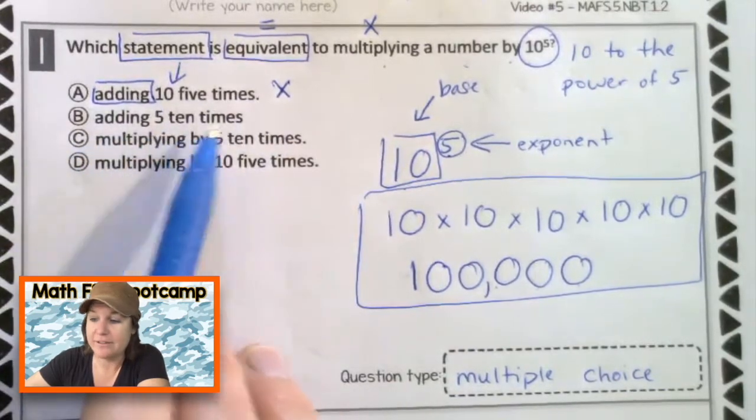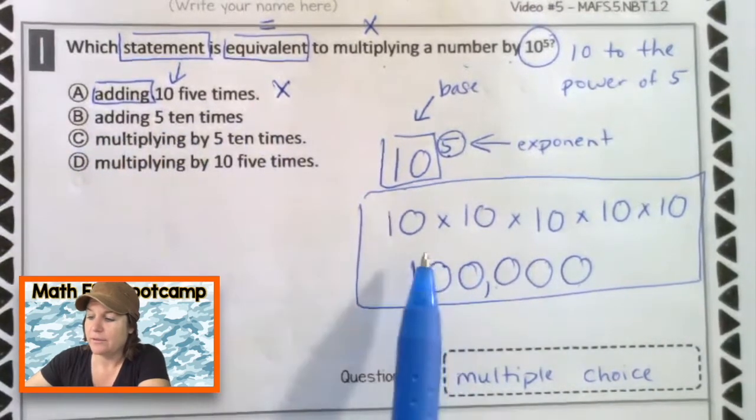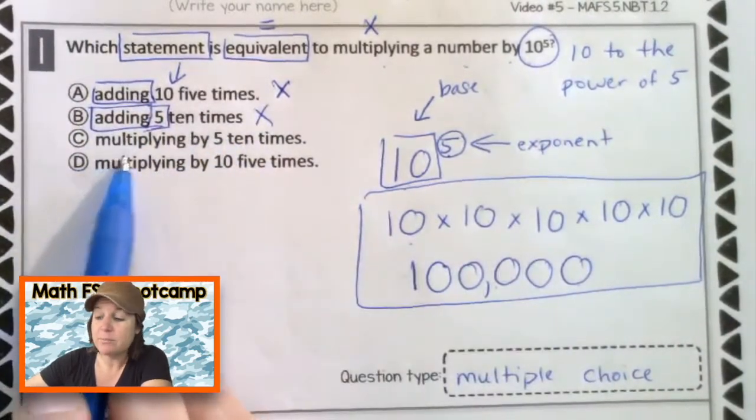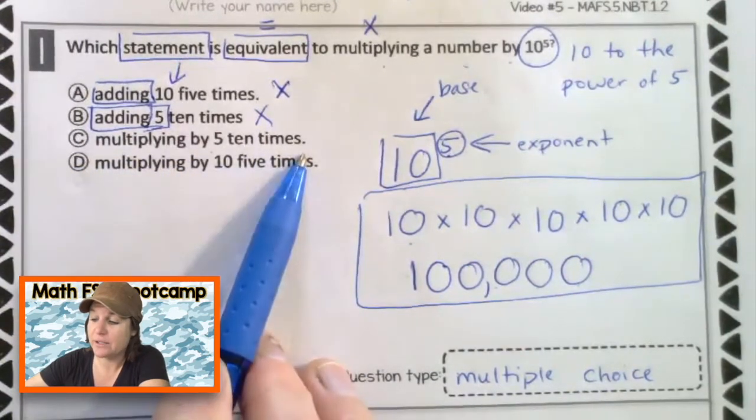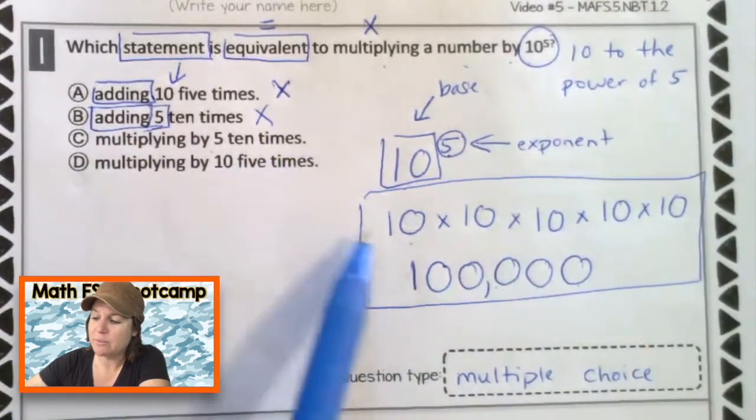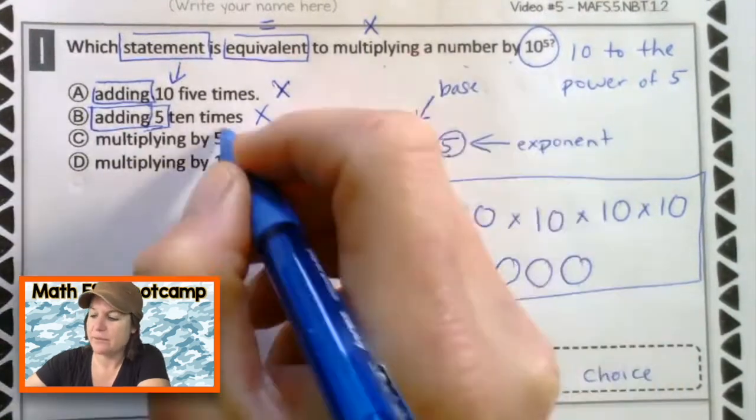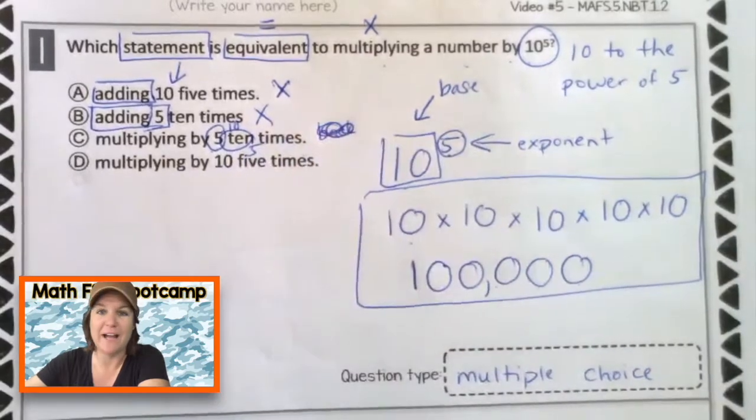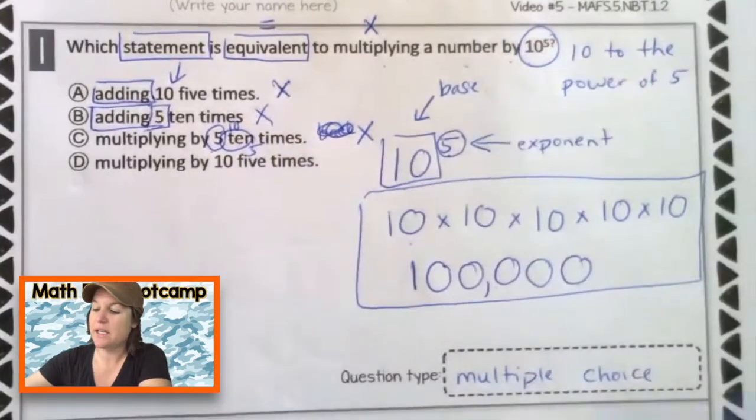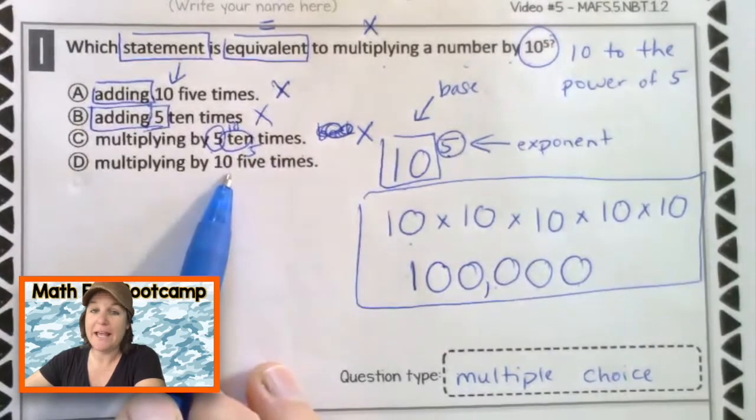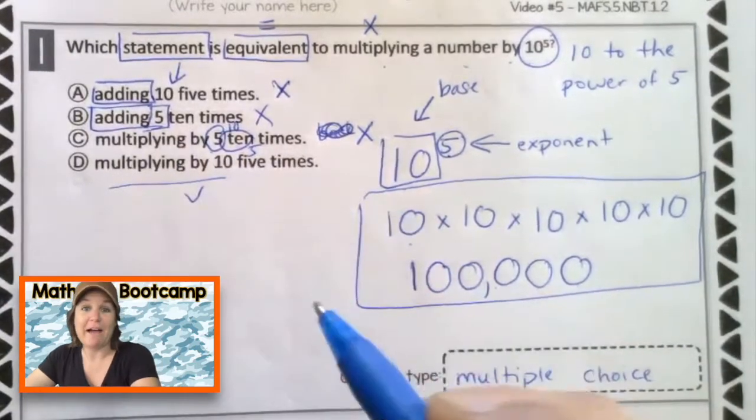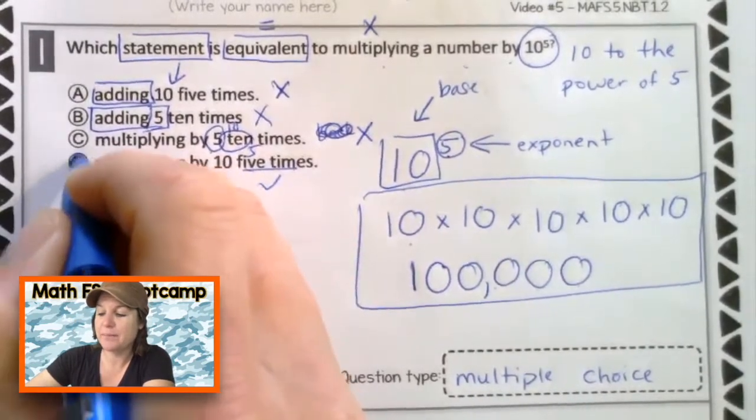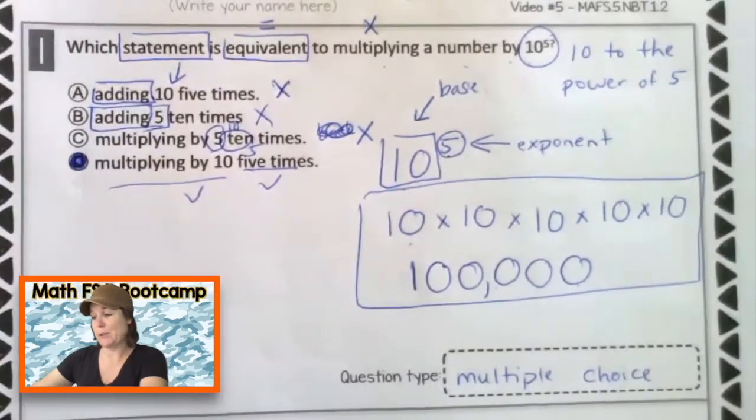Adding five, 10 times. Well, we did not add that's wrong. Eliminate C multiplying by five, 10 times. Well, we multiplied by 10, five times. This is wrong because it should have been 10 and this is wrong because it should have been five. It's kind of mixed up there. So let's eliminate C. Multiplying by 10. Yes. Did we do it five times? Yes. So ding, ding, ding. D is our answer. Awesome. Go ahead and make any corrections that you need to make to your work. And then when you're ready, join me for number two.